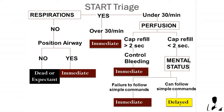If the patient's respiration is over 30 cycles per minute, the patient will be tagged red. If it is less than 30 cycles per minute, that is normal, and you can proceed to the next parameter: Pulse or Perfusion. Assess this by checking the capillary refill. If capillary refill is greater than 2 seconds, provide life-saving interventions by controlling bleeding and give a red tag. If capillary refill is less than 2 seconds, proceed to the last parameter: Mental Status.